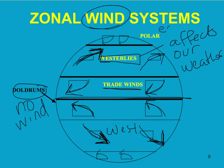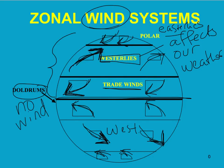Then we get what are called the polar easterlies. They're called easterlies because they come from the east and go in a west direction — same in the southern hemisphere. You will have to label these on the map. The easiest way to remember them is that the northern hemisphere is a mirror reflection of the southern hemisphere. If you remember the trade winds, westerlies, and easterlies, you can fold your paper in half and draw these on top — it's a mirror image.